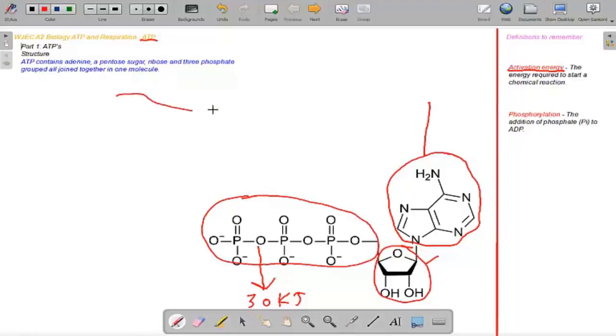So for example if I had a protein channel here and I wanted to send a molecule through my channel like this but it was so big that it couldn't fit through the channel. I need it to change shape so ATP would come along and the phosphate would break off in the presence of water.